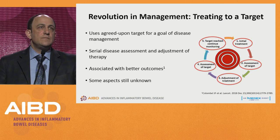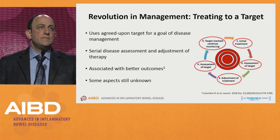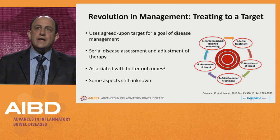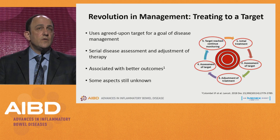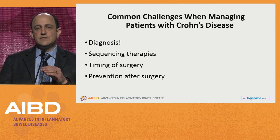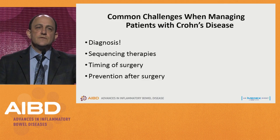The CALM study had mucosal healing as its primary endpoint — an objective primary endpoint, not symptomatic or CDAI-based. We shouldn't necessarily assume we should treat everyone to target and burn through all the available therapies. The common challenges when managing patients with Crohn's disease include: making the diagnosis, sequencing therapies, timing of surgery, and prevention after surgery.